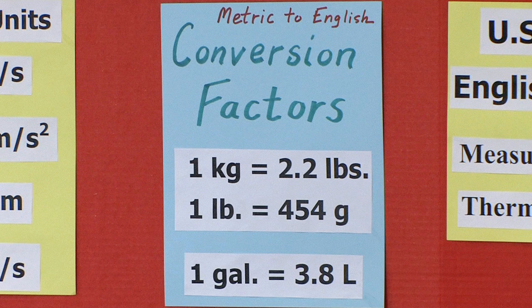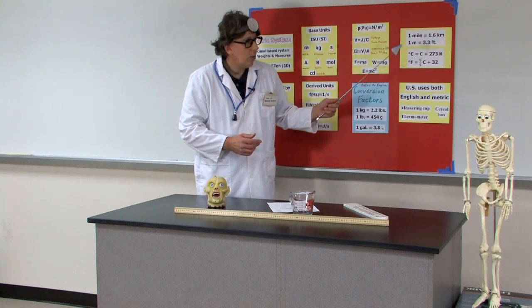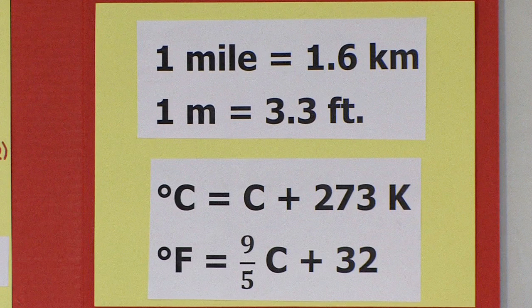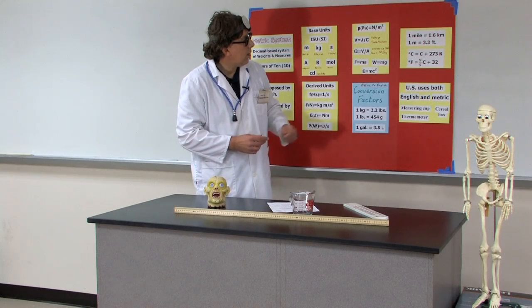The kilogram is 2.2 pounds. The pound is about 454 grams. A gallon is 3.8 liters. One mile — if you've traveled a mile in those shoes — you've gone 1.6 kilometers. One meter is about 3.3 feet, so a little more than a yard.